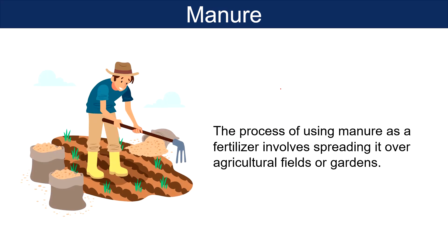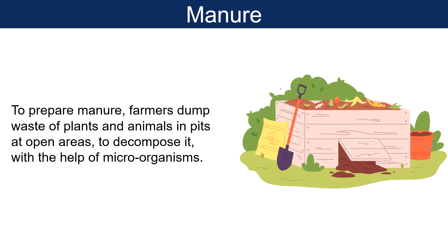The process of using manure as a fertilizer involves spreading it over agricultural fields or gardens. As manure decomposes, it releases nutrients into the soil, providing plants with necessary elements for growth. To prepare manure, farmers dump waste of plants and animals in pits at open areas to decompose it with the help of microorganisms. The matter obtained after decomposition is called organic manure.